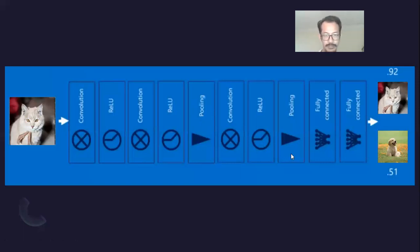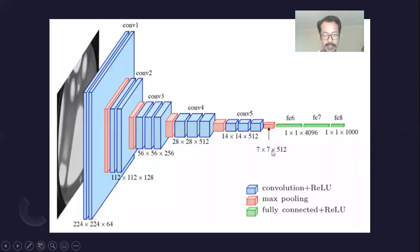For example, this is one example network, and you can configure the number of layers and in what order the layers are in. And there's no one solution fits all for different types of images.